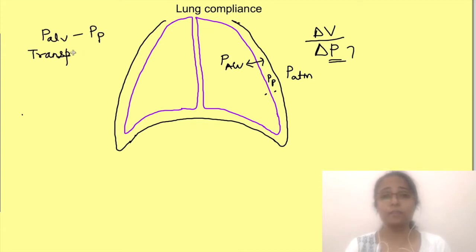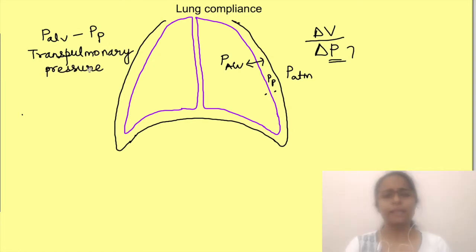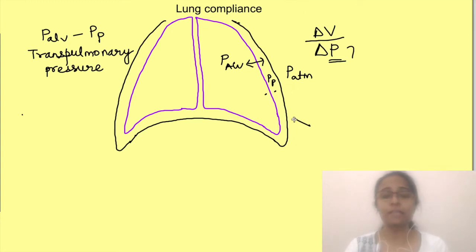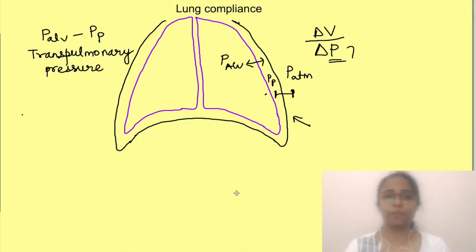This difference between alveolar and pleural pressure is also known as transpulmonary pressure. For the thoracic cage, we would take the difference between pleural pressure and atmospheric pressure.